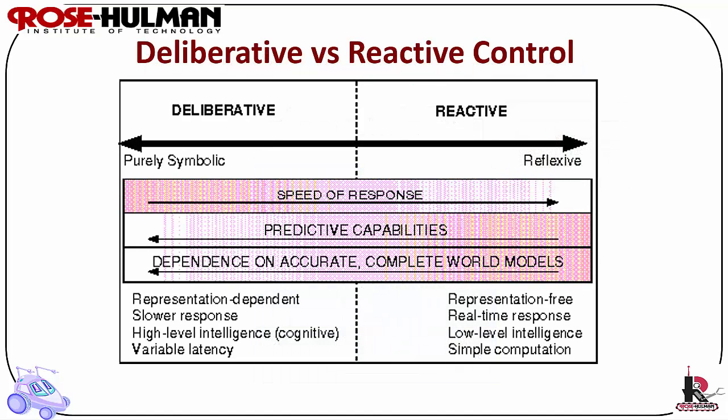Deliberative versus reactive control: this graphic is a review of the characteristics of deliberative versus reactive control. Deliberative is symbolic while reactive is reflexive. Reactive is much faster than deliberative. Deliberative has predictive capabilities due to the horizontal decomposition, and a very high dependence on complete and accurate world models, as well as a very high level of intelligence compared to reactive control. It has variable latency, or a delay between the stimulus and the response.